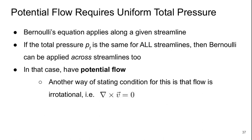The next concept as we move forward in terms of simplifying the flow field is going towards the idea of potential flow. Bernoulli's equation applies along a given streamline, but if the total pressure is the same for all of the streamlines, then Bernoulli's equation can be applied across streamlines too. In that case, we have something called potential flow. And another way of stating this mathematically is that if the flow is irrotational, which means that the gradient operator, the cross product of the gradient operator with the velocity field, also known as the curl of the velocity field, is zero everywhere.